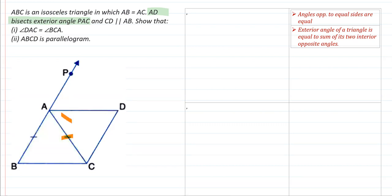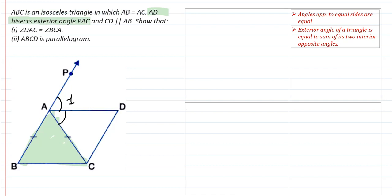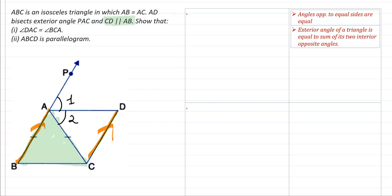We represent the two equal angles symbolically — let's call them angle 1 and angle 2, and we are given these two angles are equal. Further, it is given that CD is parallel to AB. So we have two pairs of information: two equal sides and one pair of parallel sides.